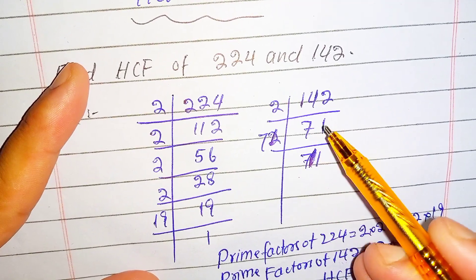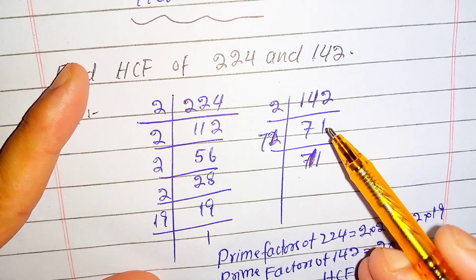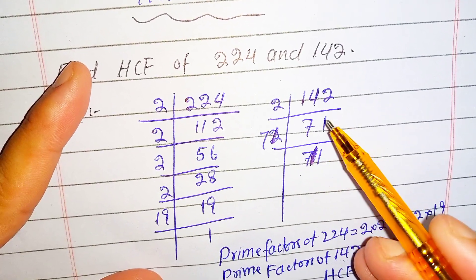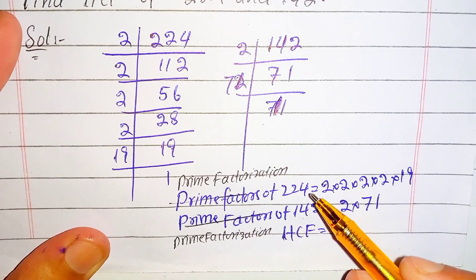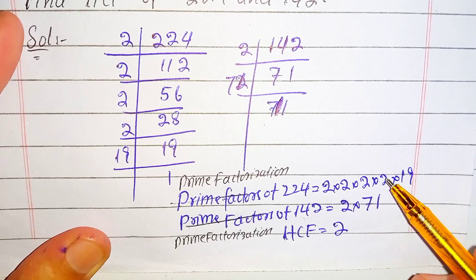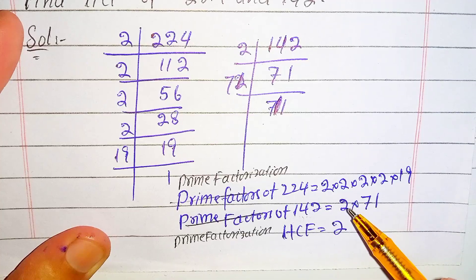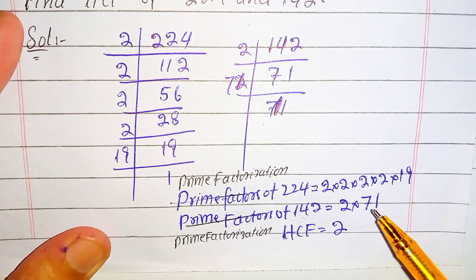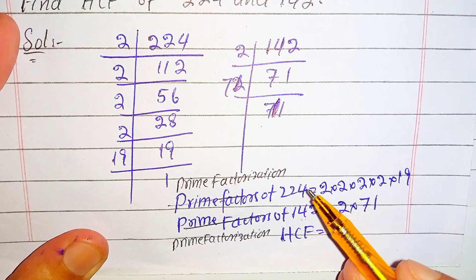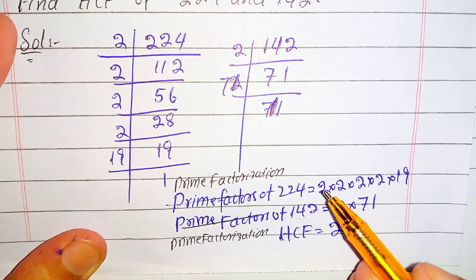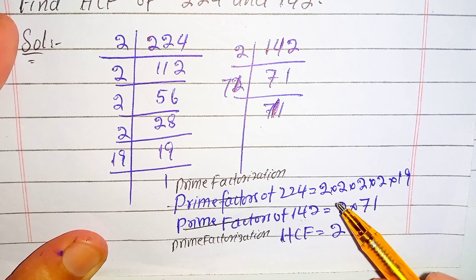Now we do the prime factorization of 142: 2 times 71 is 142, and 71 times 1 is 71, because there is no prime factor that divides 71. So the prime factorization of 224 is 2 times 2 times 2 times 2 times 19, and the prime factorization of 142 is 2 times 71. Looking for common factors of 224 and 142, the only common factor is 2.